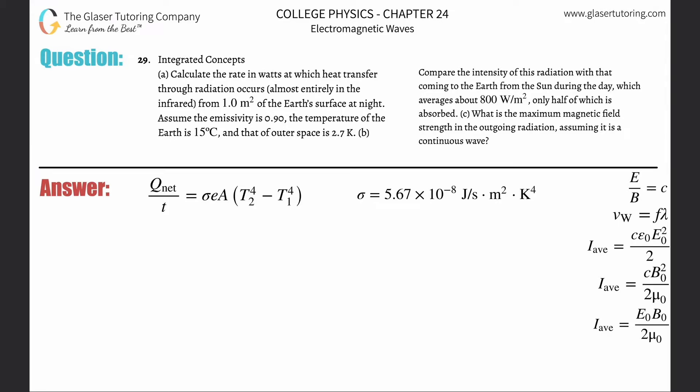Number 29, integrated concepts, letter A. Calculate the rate in watts at which heat transfer through radiation occurs from one meter square of the Earth's surface at night. Assume the emissivity is 0.9, temperature of Earth is 15 degrees Celsius, and that of outer space is 2.7 Kelvin. We need the radiation formula from chapter 14.